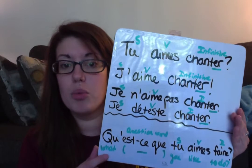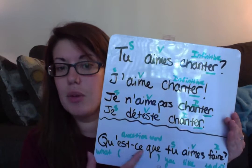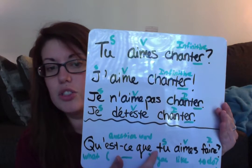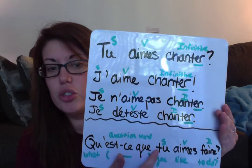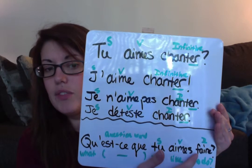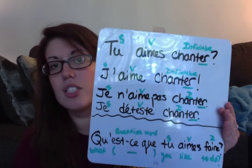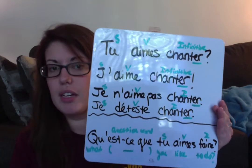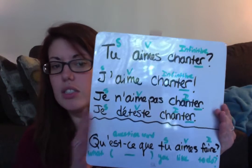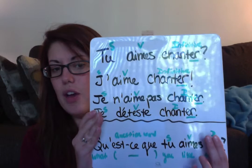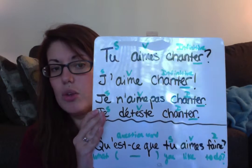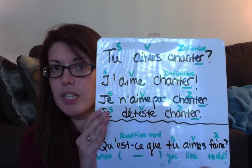So you have the question word 'what,' then est-ce que which signals this is a question, then tu — there's your subject, 'you' — then aimes — there's your verb, 'like' — and then we use the infinitive faire, which means 'to do.' Qu'est-ce que tu aimes faire? And faire you'll say a lot in this chapter. You can also stop the question short: qu'est-ce que tu aimes, 'what do you like?' or the full qu'est-ce que tu aimes faire, 'what do you like to do?'